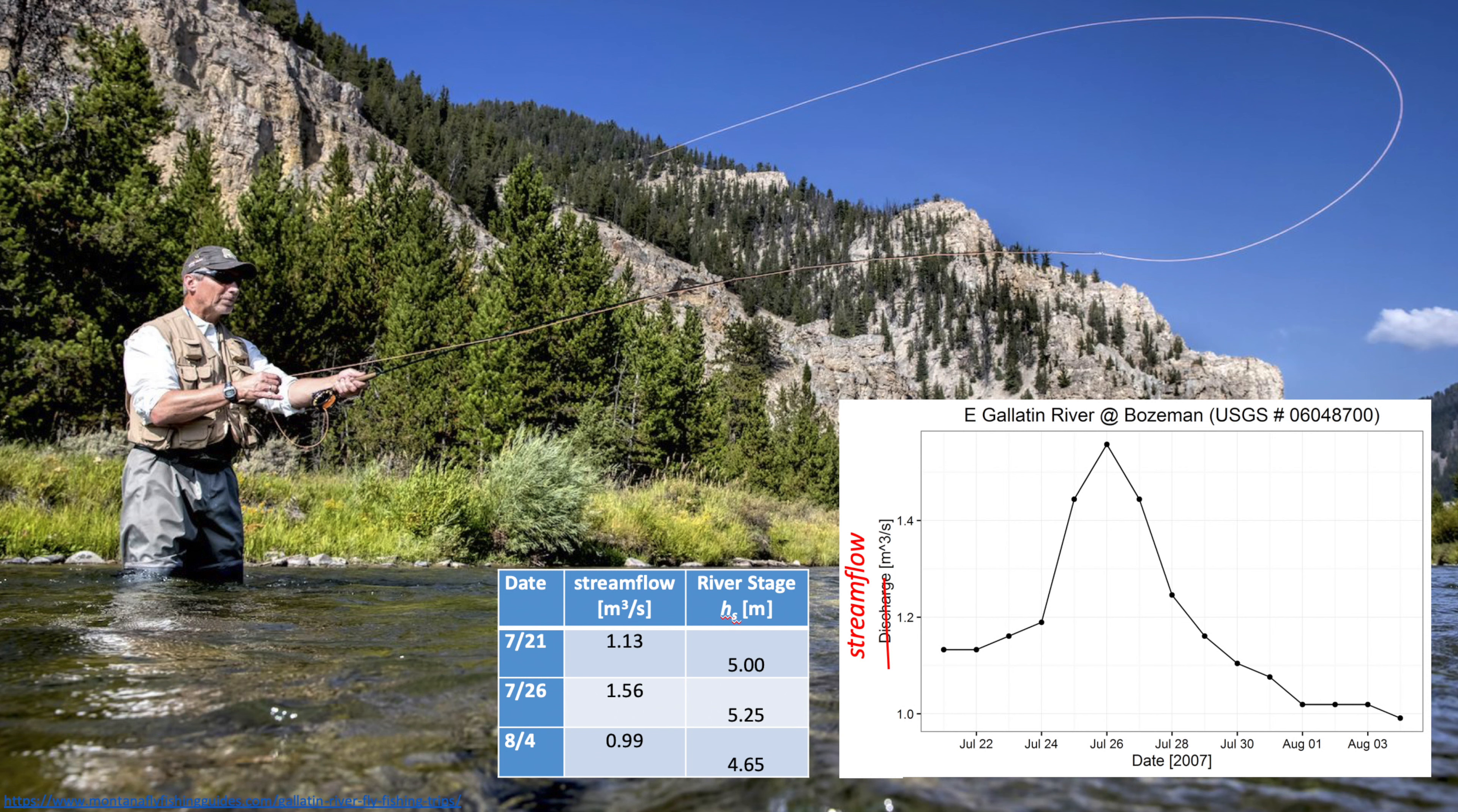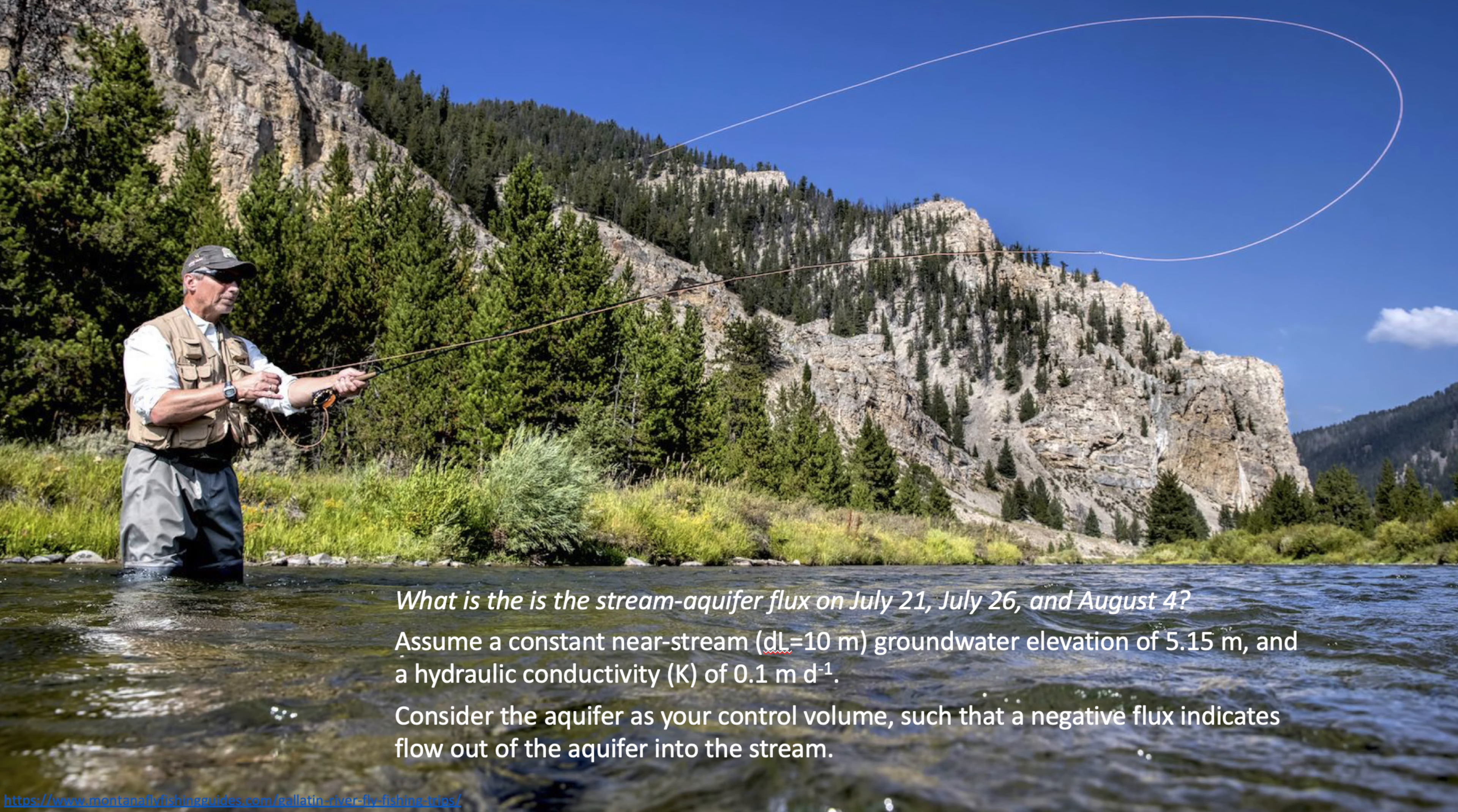On this slide you can see a graph of stream flow through time during the storm in 2007. River stage or river height was measured at three different dates: July 21st, July 26th, and August 4th. We're going to assume a nearly constant hydraulic conductivity and constant groundwater elevation. Our hydraulic conductivity is 0.1 meters per day and our groundwater elevation is 5.5 meters.